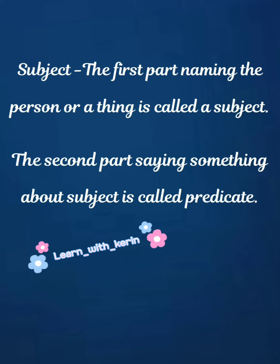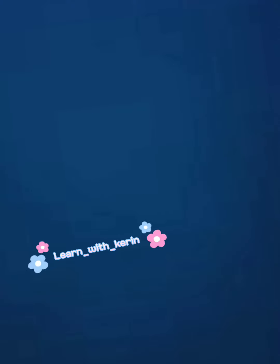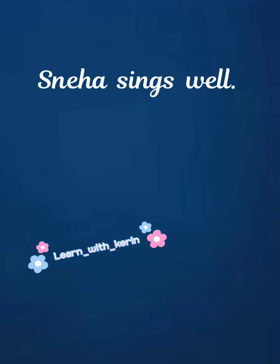Children, now let us consider a few examples and identify the subject and predicate in the given sentences. Sneha sings well. Children, here the naming word is Sneha, so Sneha is a subject and sings well is a sentence which says something about Sneha.